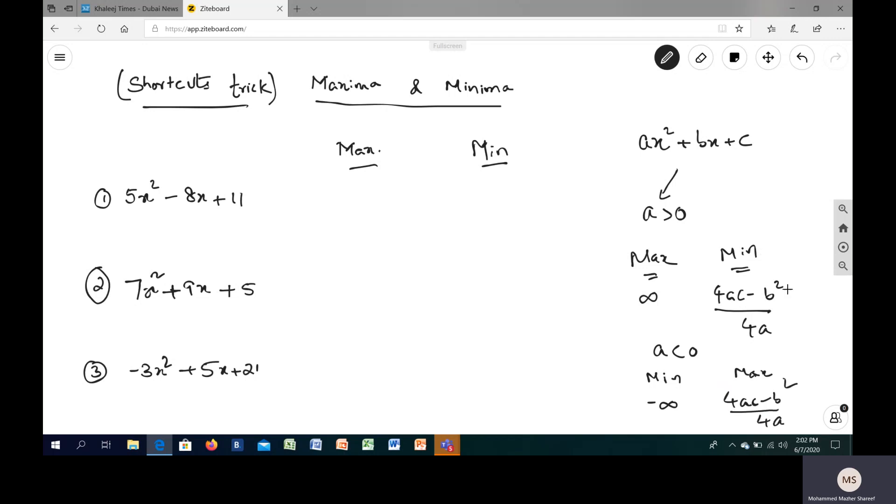So when a is positive, the minimum would be found with this formula, but when a is less than 0, it will switch, and the maximum you will get with that formula. Now let us solve a few questions based on this one. Since both are positive, you can check the coefficient of x squared is positive in both cases, so directly you can put your answer.